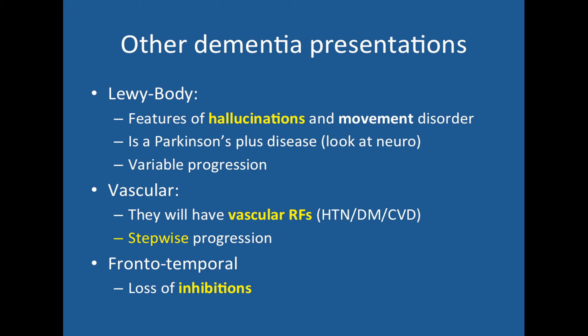Frontotemporal or Pick's dementia mainly presents with loss of inhibitions. The frontal cortex regulates behaviour, and when this is lost the patient loses their inhibitions — so they might be aggressive or sexually inappropriate. That generally points towards frontotemporal dementia.